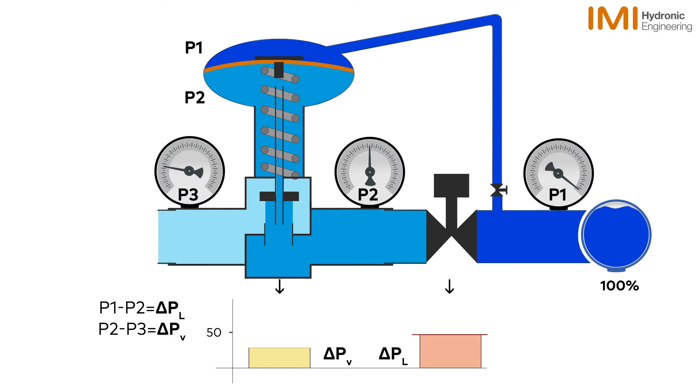As flow decreases in the circuit, initially delta PV will decrease and delta PL will increase as their pressure increases on the control valves.